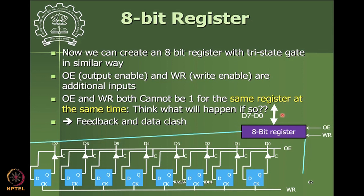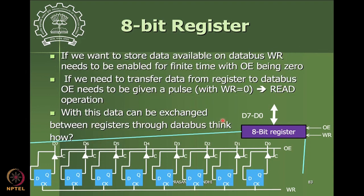Henceforth we'll refer to this register as a small block with an output enable pin and a WR pin. When output enable goes high, data from the 8-bit register is available on the data bus. When the WR pin is high, data from the data bus is written to the register. Both cannot be high at the same time — that would cause a data clash, essentially shorting Q to D.